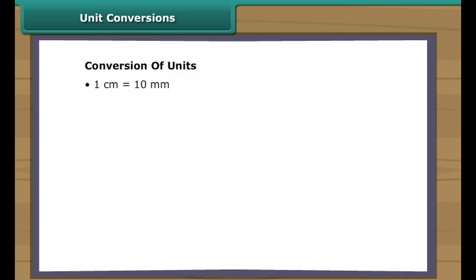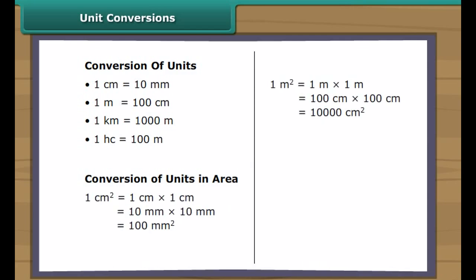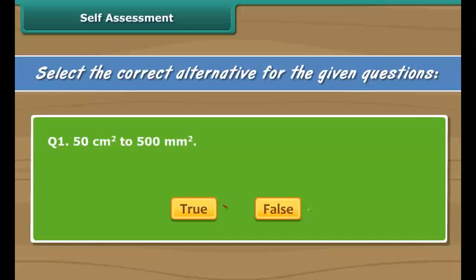Unit conversions. We know that in one centimeter there are 10 millimeters. In one meter, there are 100 centimeters. In one kilometer, there are 1,000 meters. In one hectare, there are 100 meters. Sometimes we require changing from a bigger unit to a smaller unit. Now we know the basics of the unit system, so we can easily convert from a bigger unit to a smaller unit.